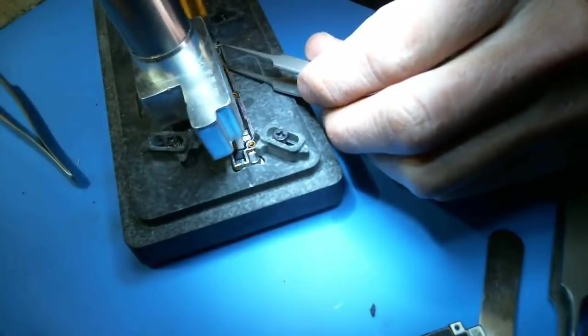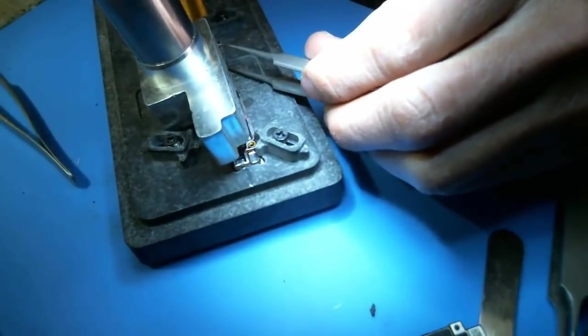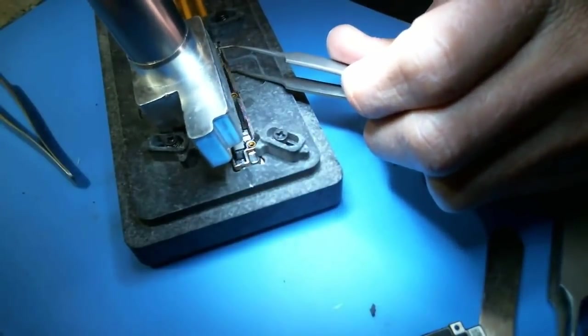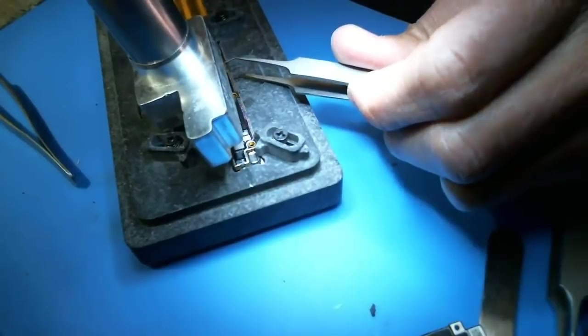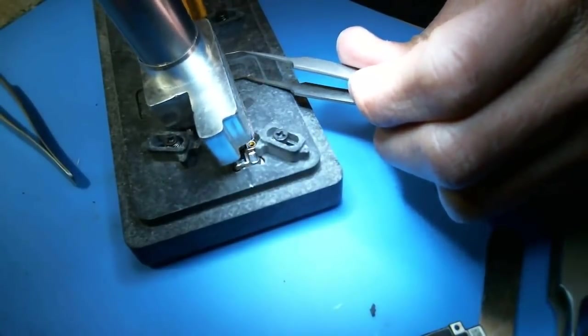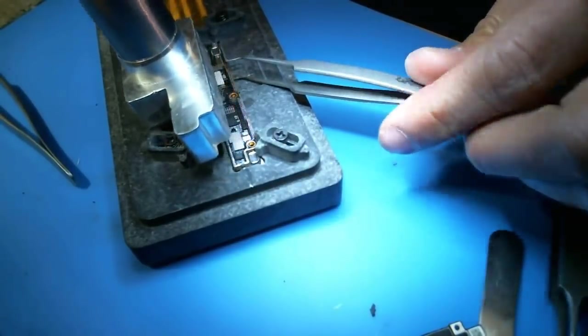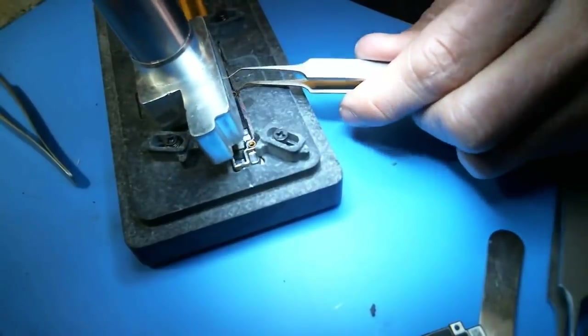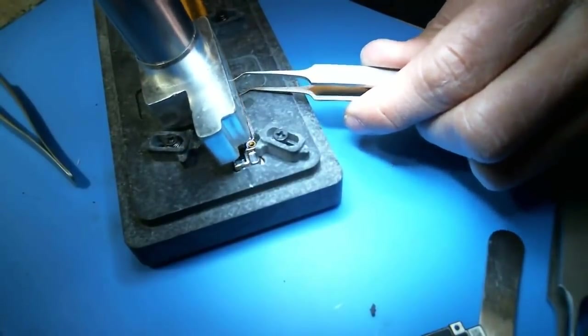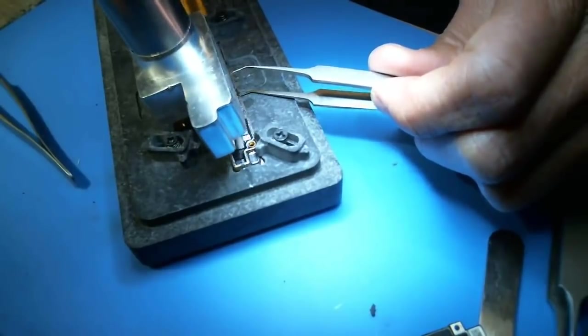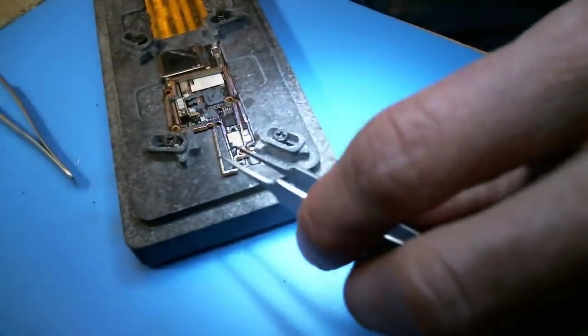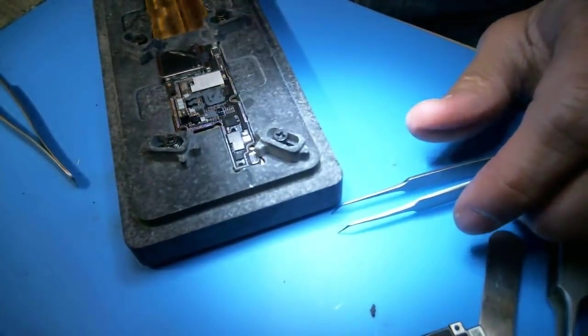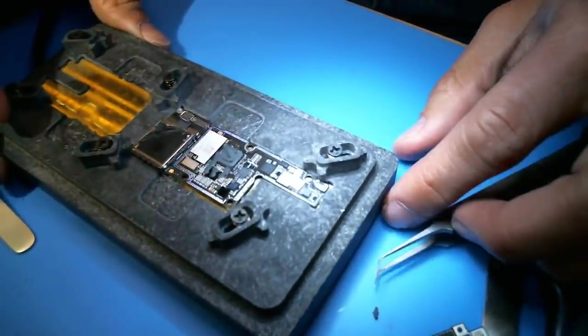I guess I could go a little hotter on my preheater too. Alright, so that popped up. So I'm at 400 degrees on this bad boy, 402 degrees, and I'm using the Quick 957.